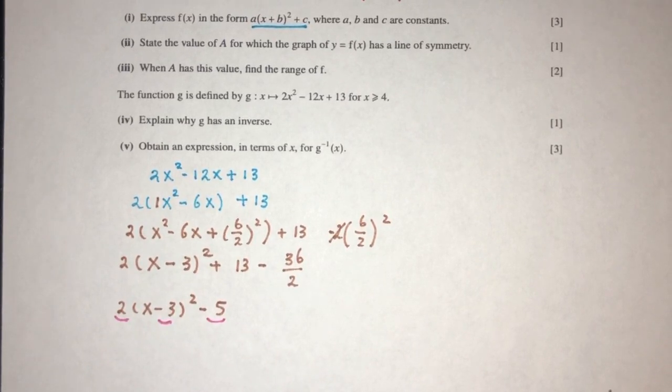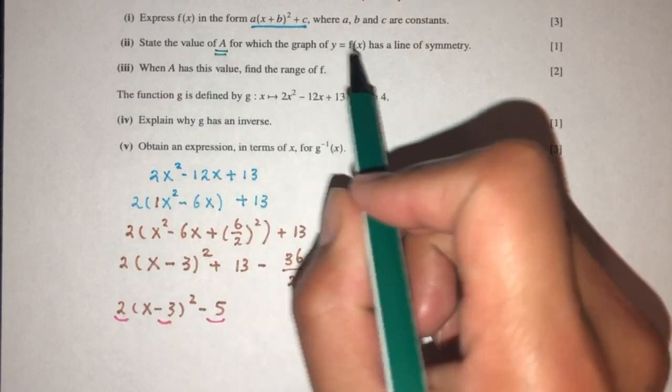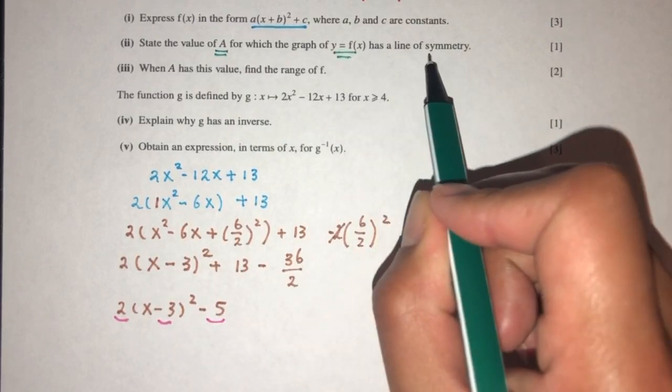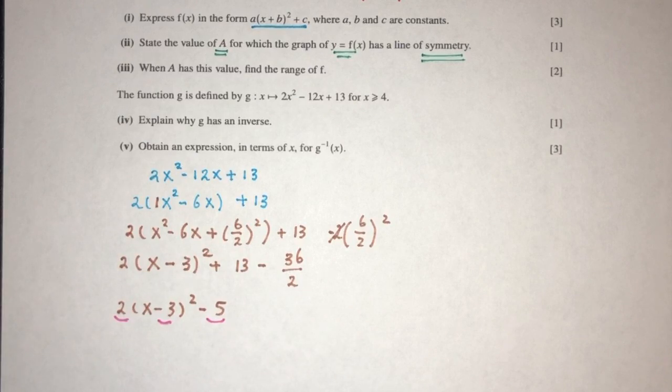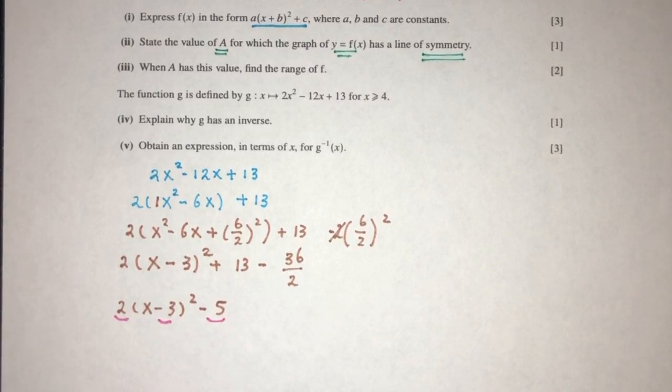Now for part 2, state the value of a for which the graph has a line of symmetry. So let's see, where can we have a line of symmetry? If you observe, because for this kind of question, usually we have to look at the shape of the graph.